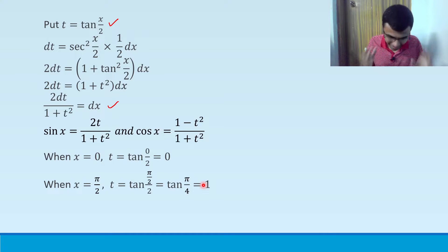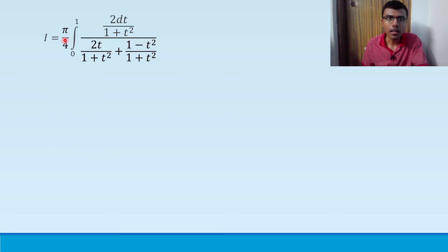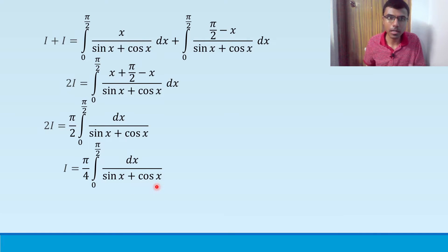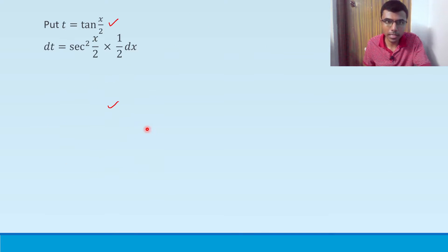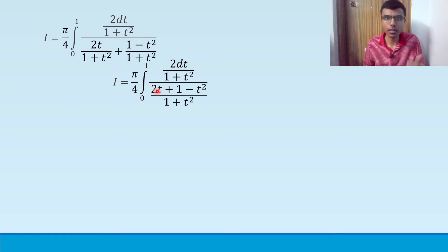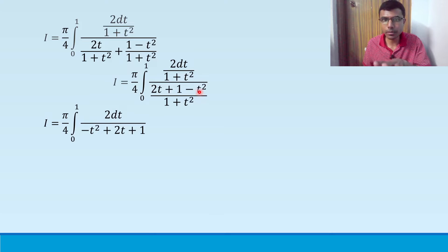Substituting into the integral: I = (π/4) · integral from 0 to 1 of [2dt/(1 + t²)] divided by [2t/(1 + t²) + (1 − t²)/(1 + t²)]. Both denominators are the same, so I add the numerators to get 2t + 1 − t² in the numerator over (1 + t²). The (1 + t²) factors cancel, leaving I = (π/4) · integral from 0 to 1 of dt/(2t + 1 − t²).